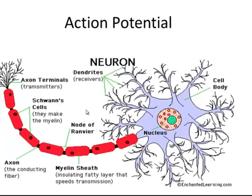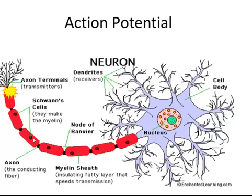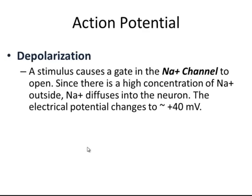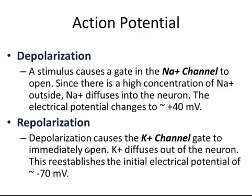The action potential bounces down to the end of the axon. The signal — depolarization and repolarization — can speed up, meaning more action potentials per second. What it can't do is change its speed, stop, or slow down. All that changes is the number of action potentials per second — that's the signal frequency, that's the signal information. The depolarization is caused by sodium channels opening, and potassium goes out.